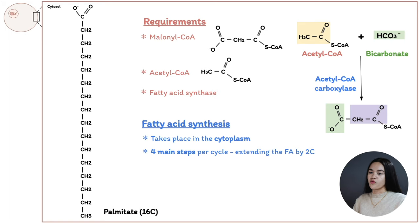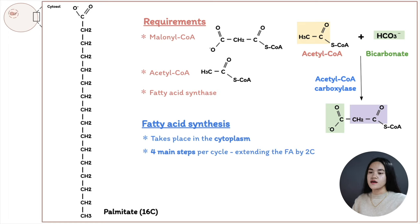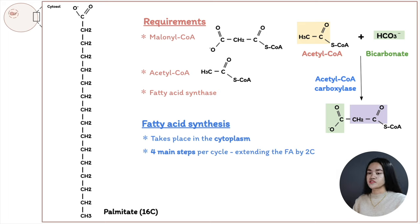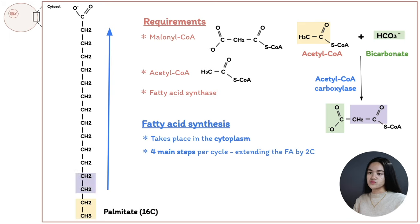Fatty acid synthesis is quite similar to fatty acid oxidation, which removes successive two-carbon units as acetyl-CoA from the carboxyl end. In fatty acid synthesis, the chain is extended by two carbon atoms per cycle, and synthesis proceeds in the opposite direction. The first acyl group comes from the acetyl group of acetyl-CoA, and then subsequent acyls come from the malonyl group of malonyl-CoA.